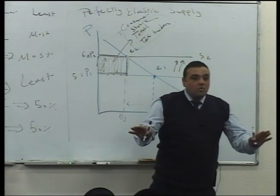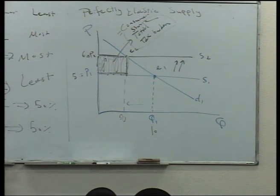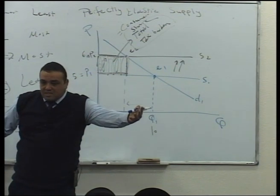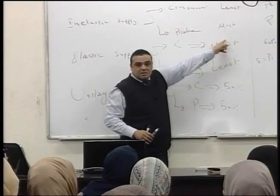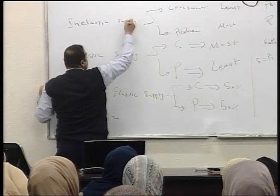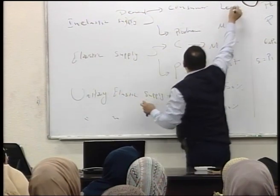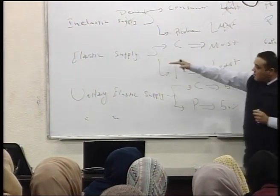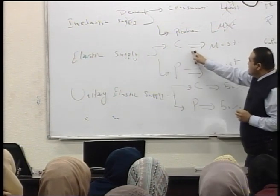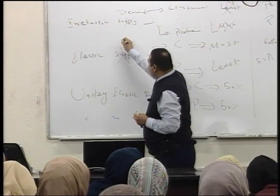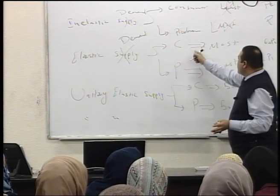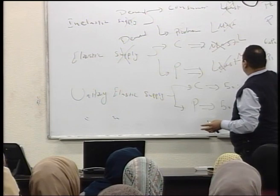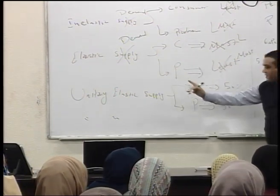Let's compare the price elasticity of demand and supply and their relations with the tax burden. When supply is inelastic: consumer bears least, producer bears most. When demand is inelastic: the consumer bears most and the producer bears least. When demand is elastic, like demand for apples: the consumer bears least and the producer bears most. Unitary elastic demand: 50-50.